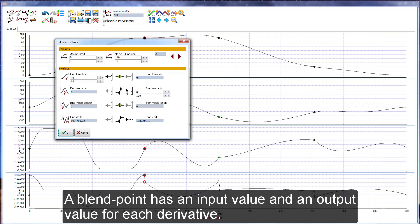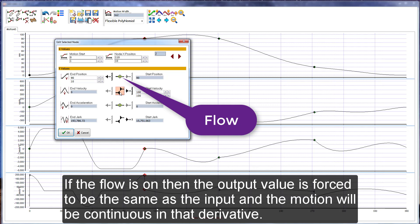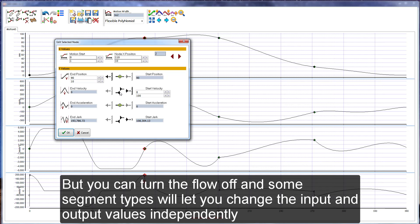A blend point has an input value and an output value for each derivative. If the flow is on, then the output value is forced to be the same as the input and the motion will be continuous in that derivative. But you can turn the flow off and some segment types will let you change the input and output values independently.